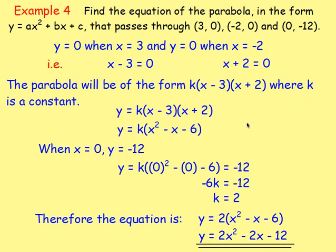This example was a bit trickier — we wanted to work out the equation of the parabola in the form ax squared plus bx plus c, given that it passed through certain points. Because we know it passed through (3, 0) and (-2, 0), we know that x equals 3 and x equals -2 are roots. So the parabola is of the form k(x minus 3)(x plus 2). Using the other point — when x is 0, y is -12 — we sub in to find k and get the equation.